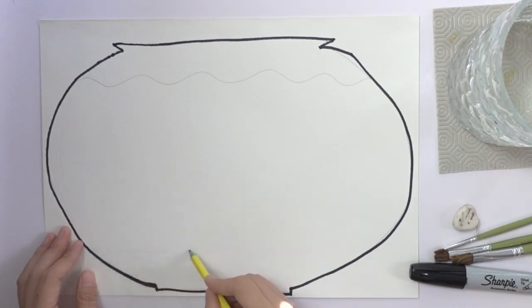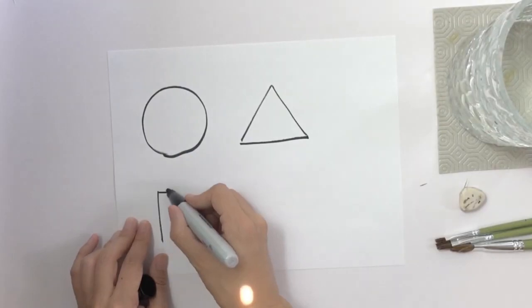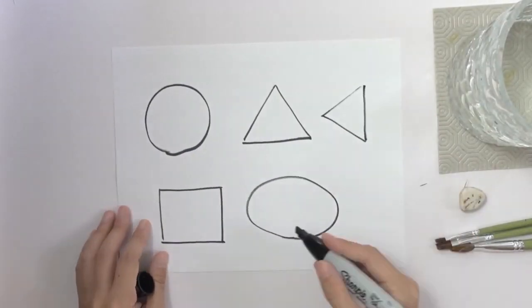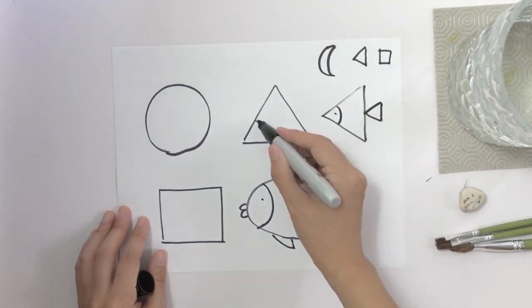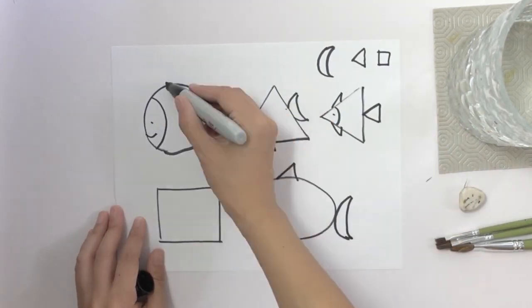Draw another curved line at the bottom. For the fish, we can use a circle, triangle, square, or oval - you can use any shape for your fish. Don't forget the fish fins.